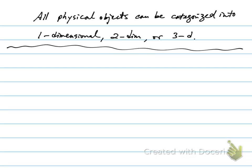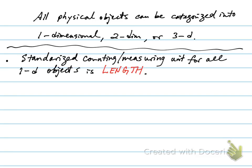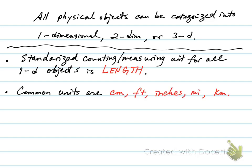The standardized measuring unit for all one-dimensional objects is called length. The common units we use for measuring lengths include centimeters, foot, inches, miles, and kilometers. For example, if I'm interested in measuring the length of a wire, you can imagine holding this wire in the air. It really lives in a three-dimensional space, but the wire itself is intrinsically one-dimensional, because the wire is so thin that it really takes up no area or volume in this space.